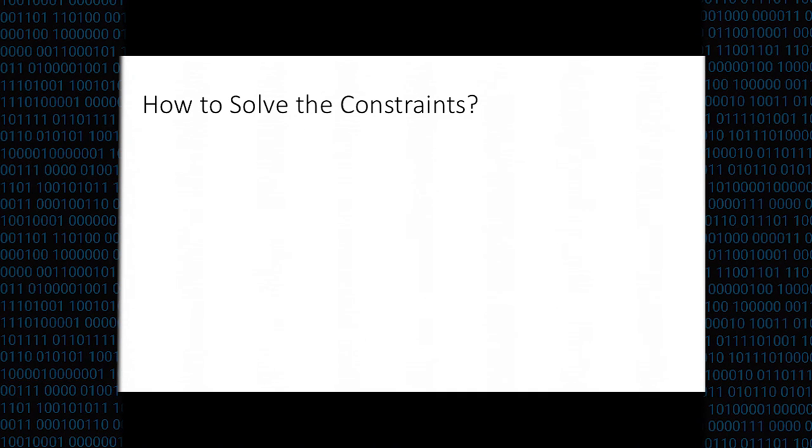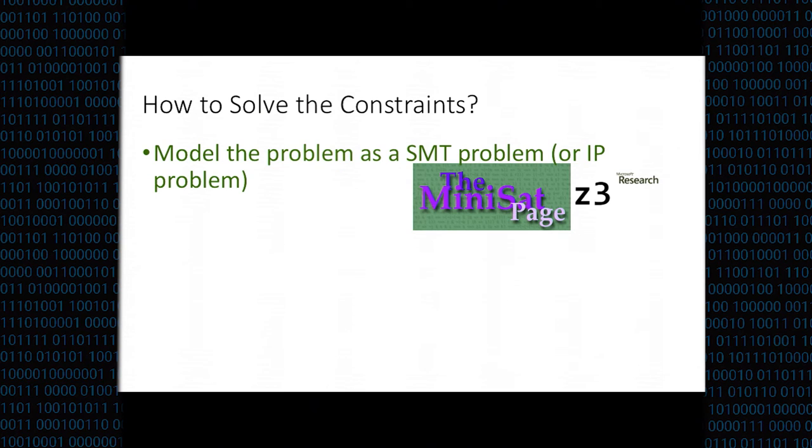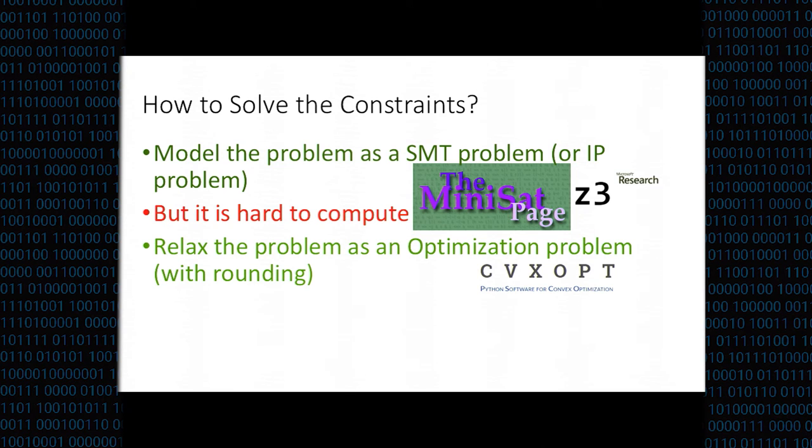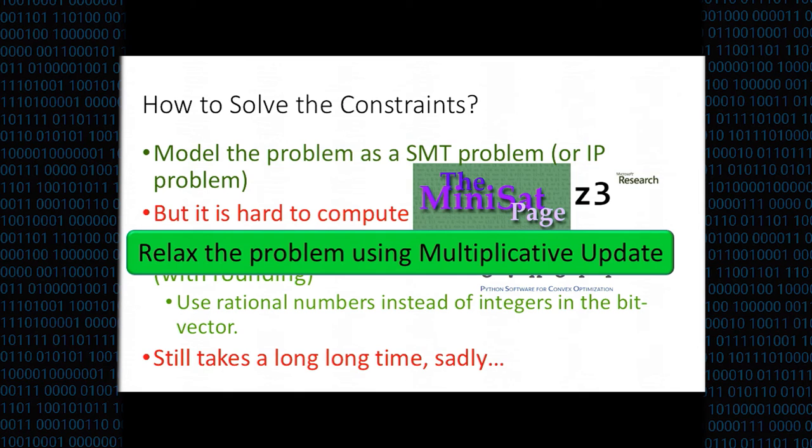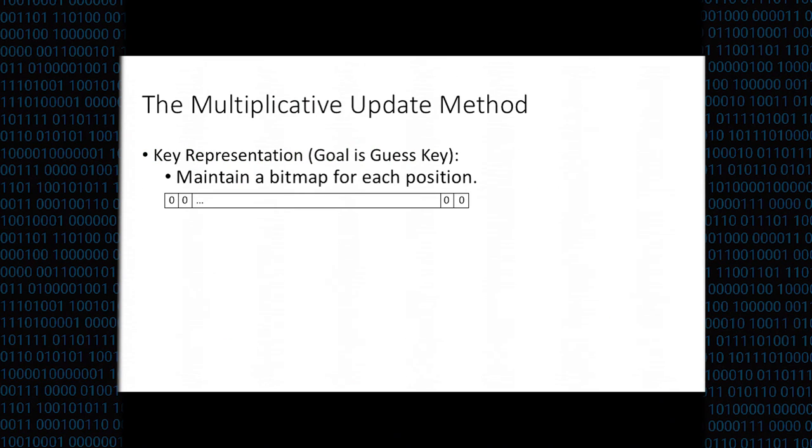How to solve those constraints? We first try the solvers, but basically it is a difficult question and it takes a long time to come to a result. Then we relax the problem as a linear programming problem or optimization problem. We use some tools and we use rational numbers instead of 0 or 1, instead of integers, to speed up the problem, but it still takes a long time. Then we come to the idea to relax the problem using multiplicative update.